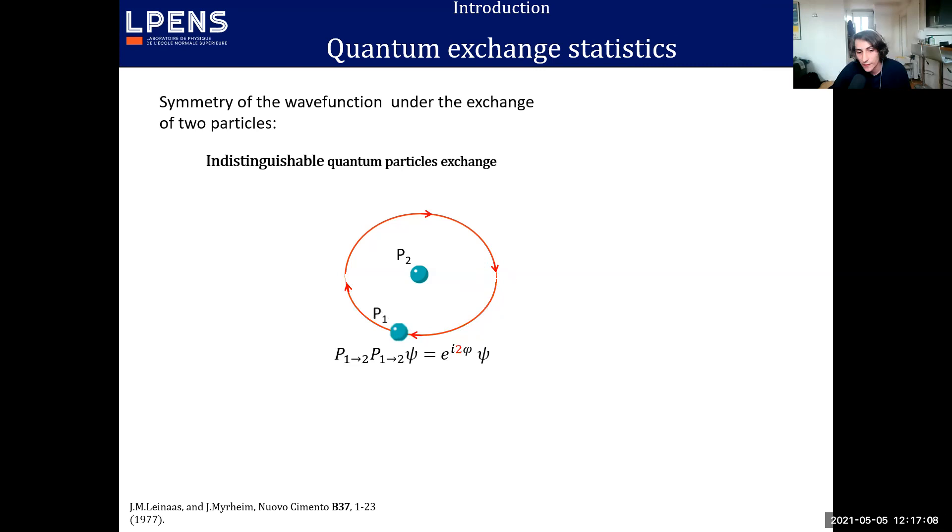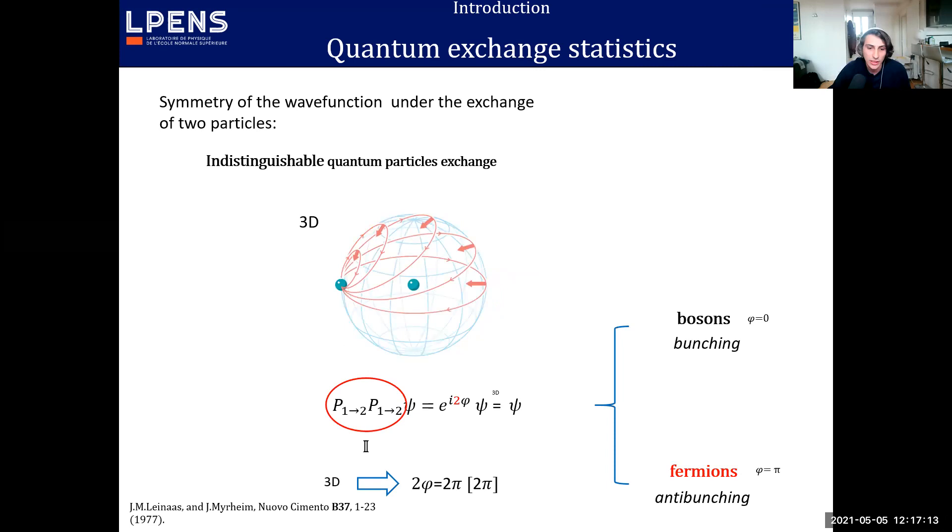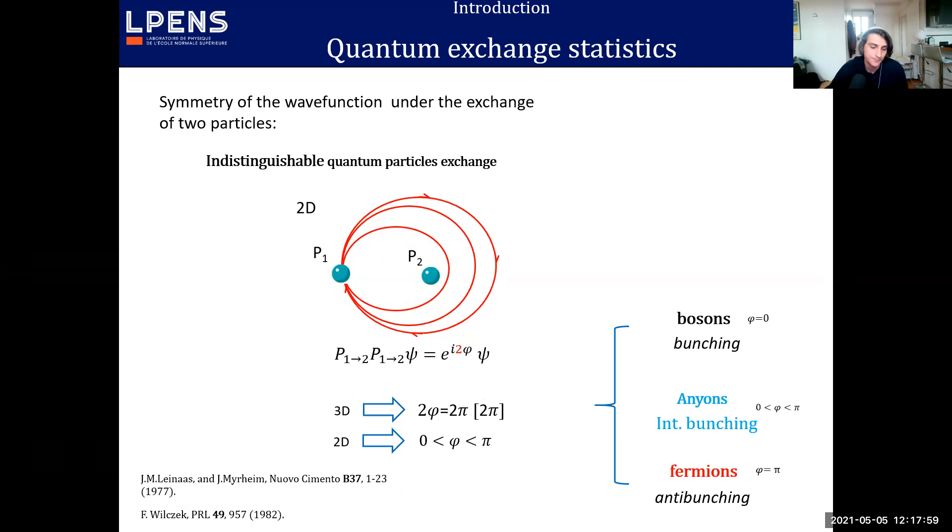If you use this process twice, you should recover for a three-dimensional system that the same situation means that doing twice this operation is equivalent to the identity. This leads to a constraint on the exchange phase that will lead to either a phase zero or a phase π. This will lead to the two big kingdoms of particles. The bosons with a phase zero will have some bunching properties. The typical example of boson is a photon and this bunching effect can be seen, for example, in lasers. On the other hand, you have the fermions with a phase π that have some anti-bunching properties, and this anti-bunching is just what we call the Pauli exclusion principle.